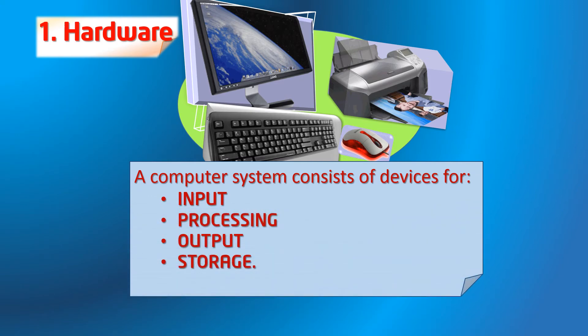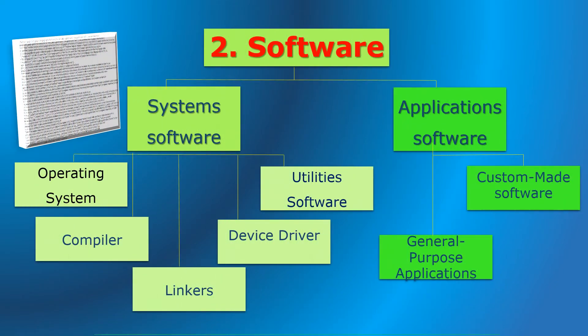Software refers to all the programs that allow the hardware to carry out the data processing. Software comprises programs or applications accessed by the user. Application software includes general-purpose software and custom-made software, while system software consists of low-level programs that interact with the computer at a very basic level.